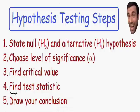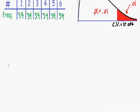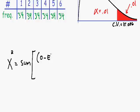Step number four says to find the test statistic. Since we're using a chi-square test, this will be a chi-square value. The formula for the chi-square statistic — written with the Greek letter chi squared — equals the sum of (observed minus expected) squared, divided by expected, across all outcomes. Let's plug everything in, starting with the number 1.